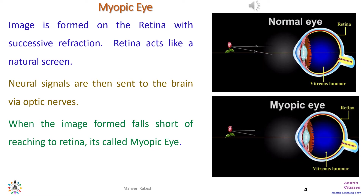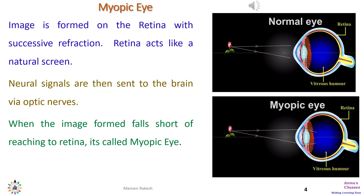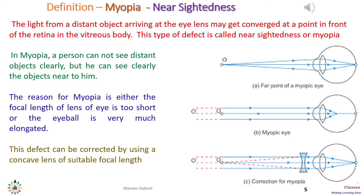When the image formed falls short of reaching the retina, it is called a myopic eye — that is, the image is formed before the retina. The light from a distant object arriving at the eye lens may converge at a point in front of the retina, in the vitreous body. This type of defect is called nearsightedness or myopia.